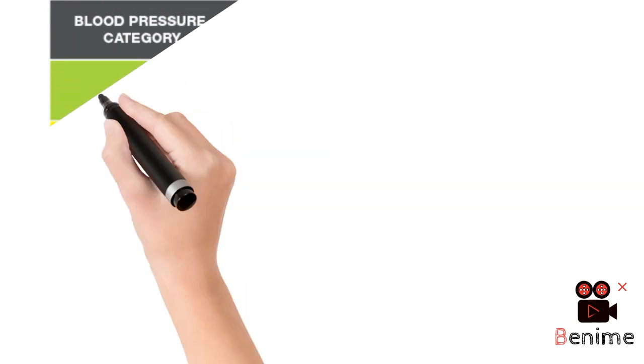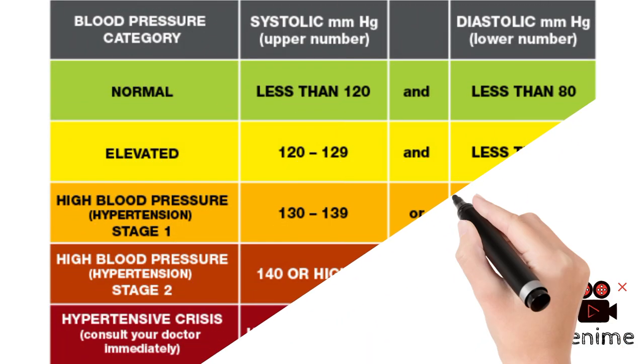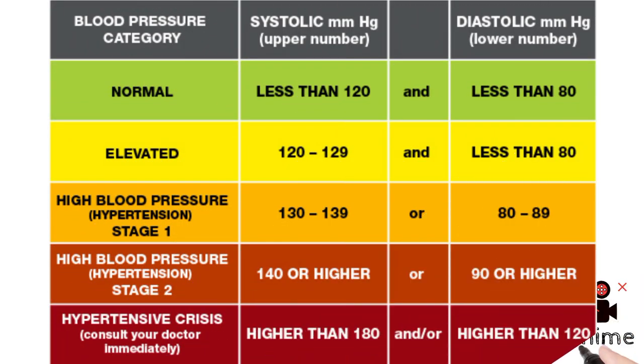When the BP increases above the normal range, it is called hypertension. According to the American Heart Association, these are the stages of hypertension.